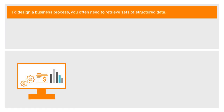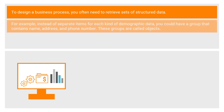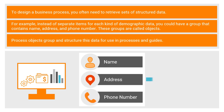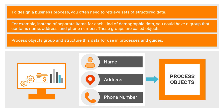To design a business process, you often need to retrieve sets of structured data. For example, instead of separate items for each kind of demographic data, you could have a group that contains name, address, and phone number. These groups are often called objects. Process objects group and structure this data for use in processes and guides.